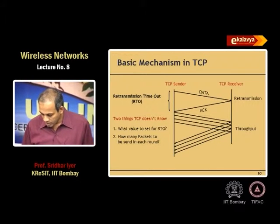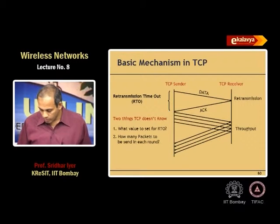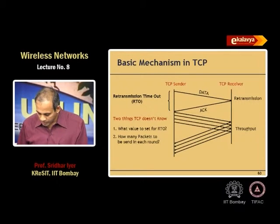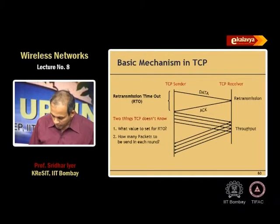You have a TCP sender. After the three-way handshake, the TCP sender sends a packet and sets up what is called the retransmission timeout (RTO). If the ACK does not come before this RTO expires, the sender assumes the packet was lost and retransmits. That is your retransmission timeout.